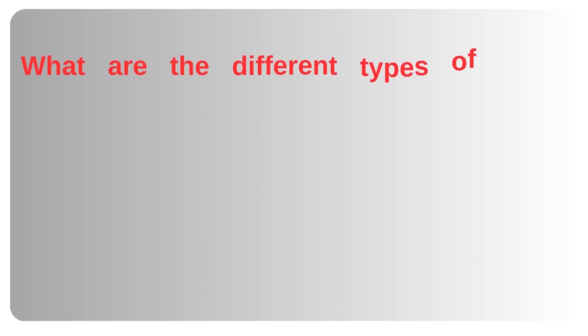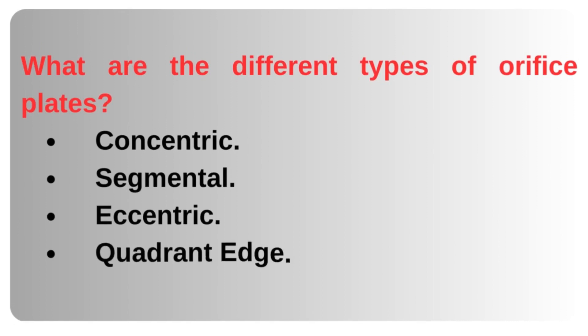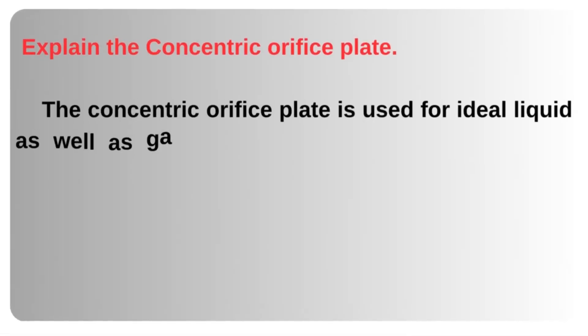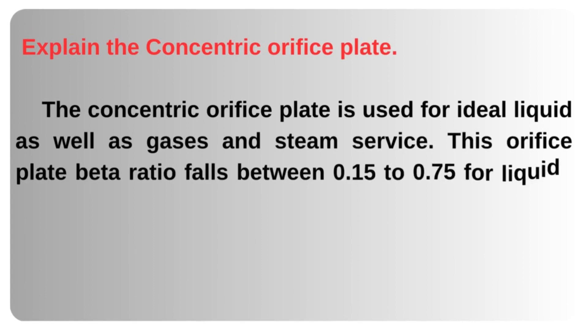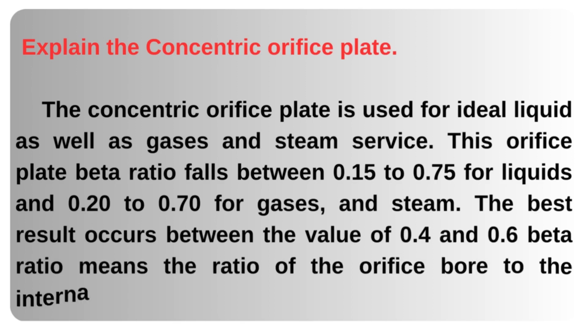What are the different types of orifice plates? Concentric, segmental, eccentric, quadrant edge. The concentric orifice plate is used for ideal liquids as well as gases and steam service. Its beta ratio falls between 0.15 to 0.75 for liquids and 0.20 to 0.70 for gases and steam. The best result occurs between 0.4 and 0.6 beta ratio.